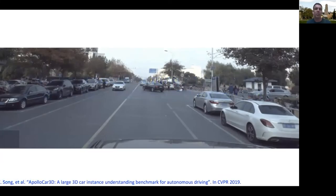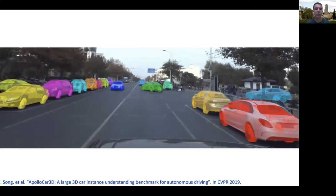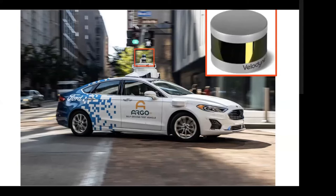One problem I'm really interested in is autonomous cars. You have an autonomous car driving down the street, and it needs a good understanding of other vehicles — specifically their 3D position and 3D spatial extent. The most obvious solution is through hardware. We see a lot of autonomous cars driving around with a LiDAR on top, shooting out lasers and using time-of-flight to determine depth. It's really good and useful.